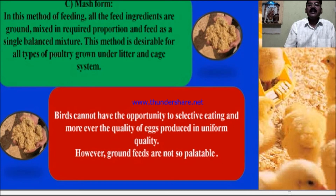More nutrient values are protected in pelletized forms. Chicks feed in less time and grow more. The feed conversion ratio (FCR) is very low. The third is mash form. In this method, all feed ingredients are ground and mixed in the required proportion and fed as a single balanced mixture. This method is desirable for all types of poultry grown under litter and cage systems. Birds do not have the opportunity for selective eating, and egg quality produced is uniform. However, ground feeds are not so palatable.